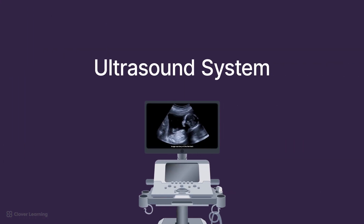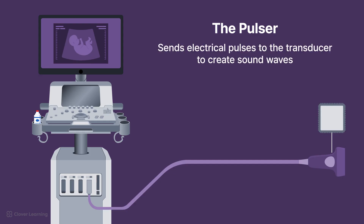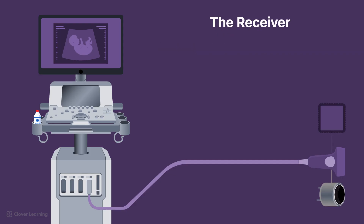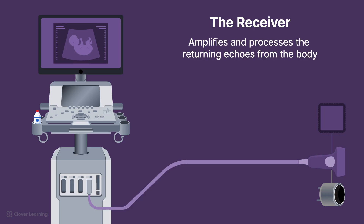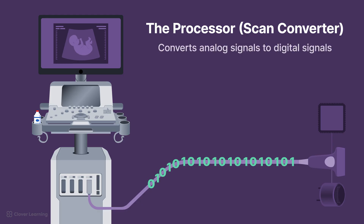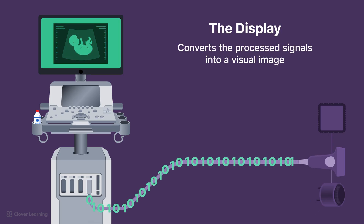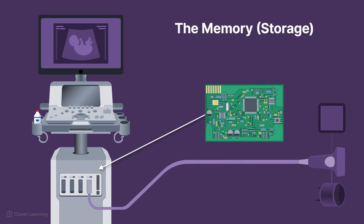The ultrasound system consists of the pulsar, which sends electrical pulses to the transducer to create sound waves; the receiver, which amplifies and processes the returning echoes from the body; the processor or scan converter, which converts analog signals to digital signals; the display, which converts the processed signals into a visual image; and the memory or storage, which stores images and patient data.